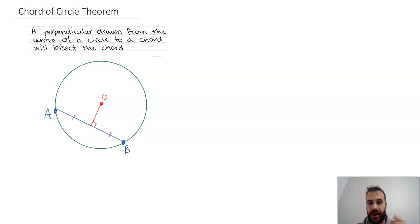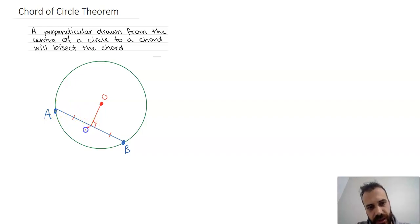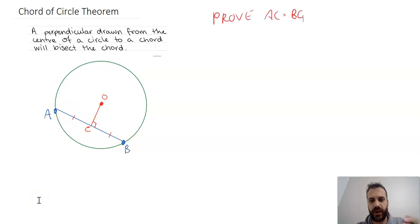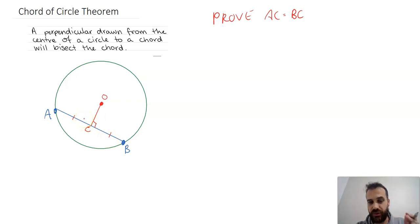What our theorem says is that if you draw a perpendicular from the center of a circle to a chord — so a right angle there — you will bisect, meaning cut in half, the chord. So what we're really trying to prove is that AC is equal to CB. We need to be aware of what we know and what we don't know. We know that's a right angle, we know that's the origin, we know this is a chord, but we don't know that these are equal — that's what we're trying to prove.